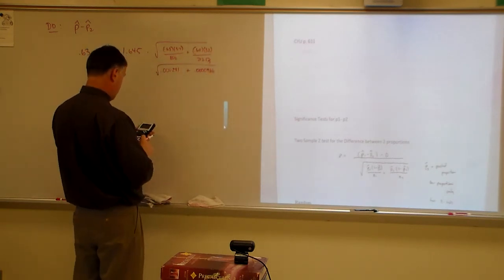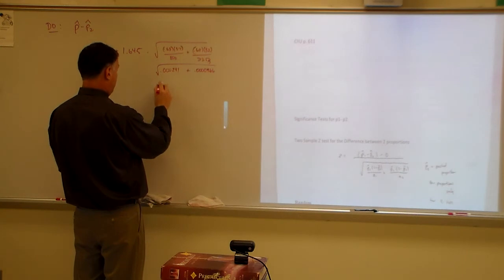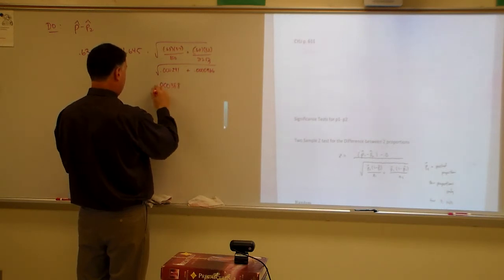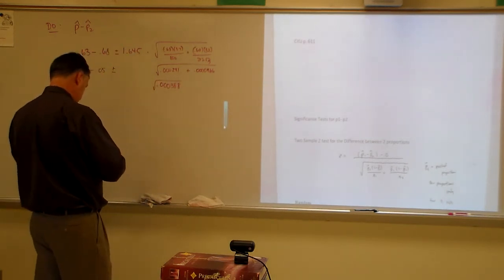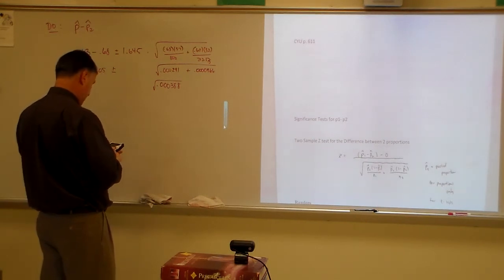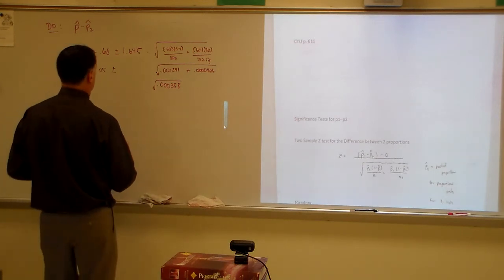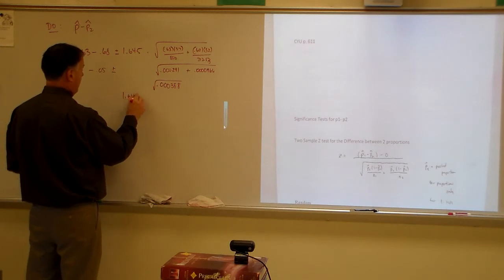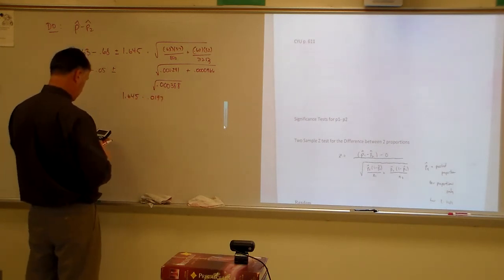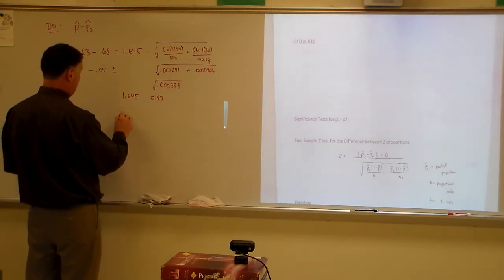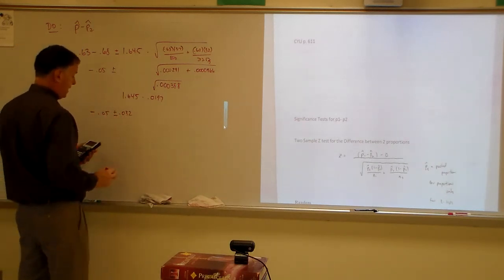Okay, so let's figure out what that is. Plus 0.000291, I get 0.000388. And then I've got to take the square root of that. 0.0197. Okay, so 1.645 times 0.0197. 0.032, after all that, 0.032, negative 0.05, plus or minus that.